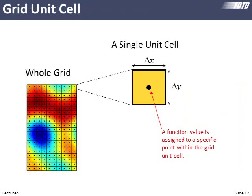Now let's look at one single unit cell. It has some width and height, and those can be different. The more similar they are, the more numerically robust your algorithm is. I've done up to 10-to-1 differences and still gotten pretty good results from FDTD, but we really want them as square as possible. The key point is we only know the field value at a single infinitely small point within that cell — we'll call this our grid unit cell.